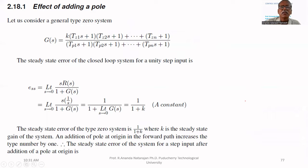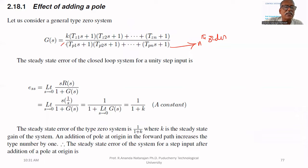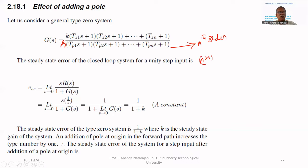If you add a pole, suppose I am having an nth order system. If I add one more pole at origin, s is added in the denominator. What is the order of the system? It becomes n plus 1. So if you add a pole to the system, the order will be increased.